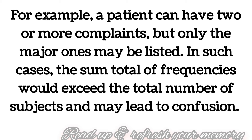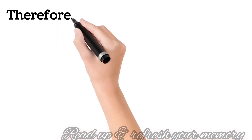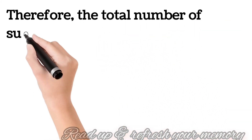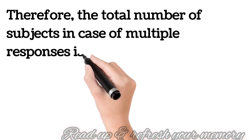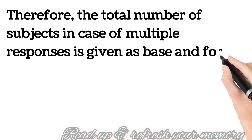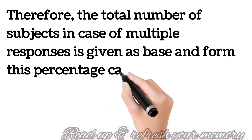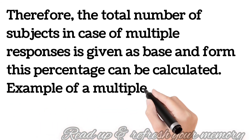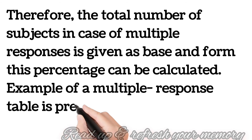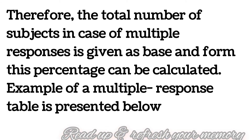We need to mention all the factors, and from those factors the percentage is calculated. We may not know whether a patient has a particular factor or not. So, for a disease, many factors may apply but a subject may or may not have that complaint. In such cases we mention multiple factors, and the percentage is calculated from them. The total number of subjects is given as the base.